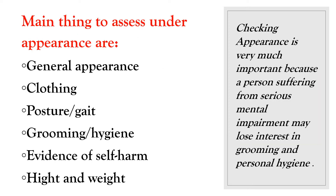The first component is appearance. Checking appearance is very important because a person suffering with a mental health problem will show loss of interest, lack of personal hygiene, less grooming, and looking very tired. General appearance can say a lot about a person. Under appearance, you have to check general appearance, clothing, posture and gait, grooming or personal hygiene, evidence of self-harm, and height and weight.